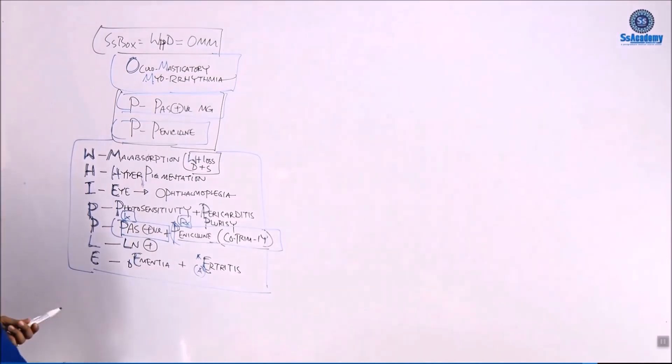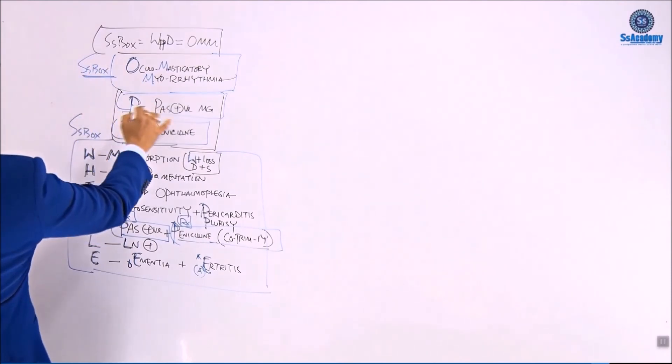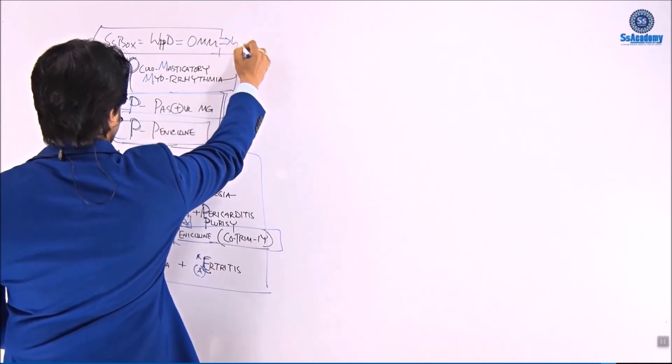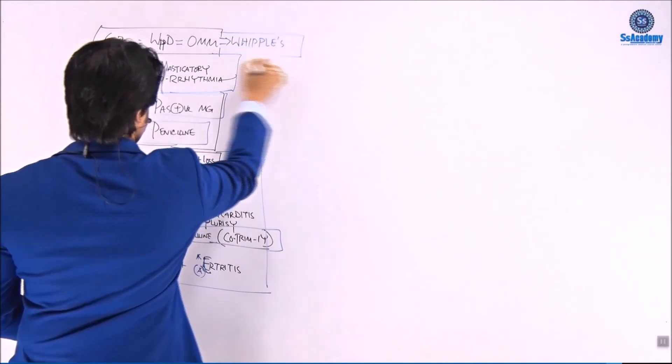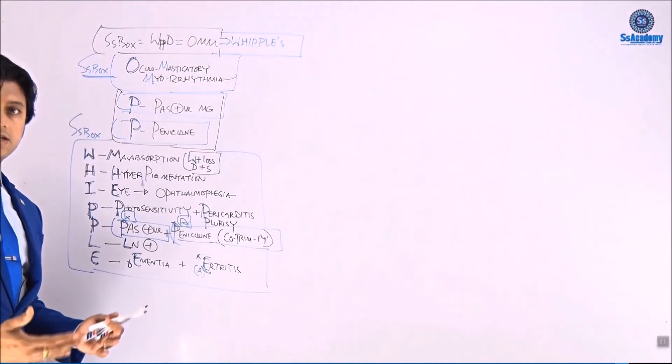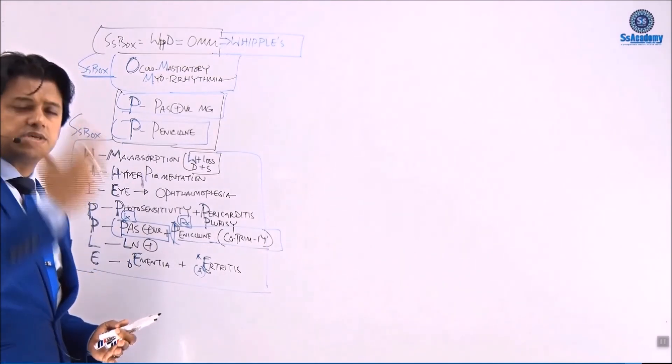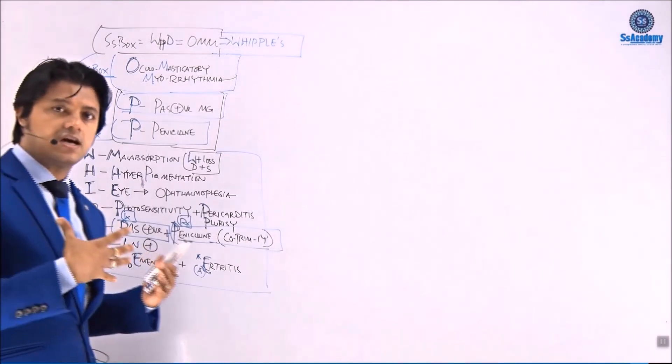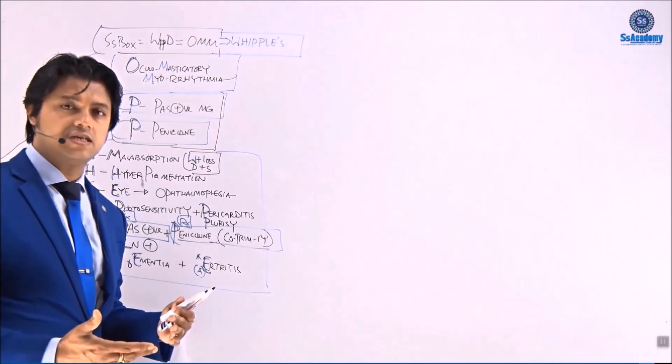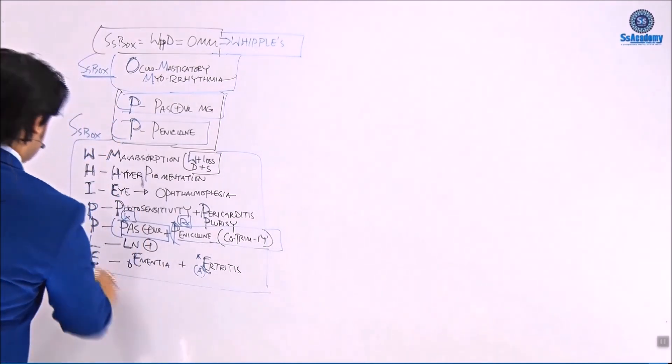We must remember Whipple's disease is W-O-M-M as well as W-H-I-P-P-L-E-S. W for weight loss, steatorrhea, diarrhea is malabsorption. H for hyperpigmentation. I for ophthalmoplegia. P for PPP: photosensitivity, pericarditis, pleurisy, as well as P for penicillin, P for PAS-positive. L for lymphadenopathy, E for dementia, E for arthritis. These Whipple's mnemonics will help remember all of them together.